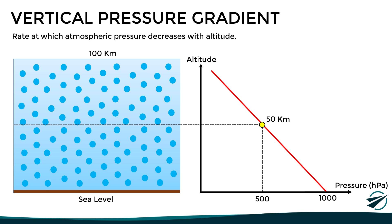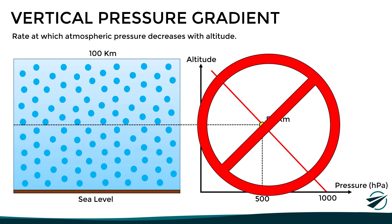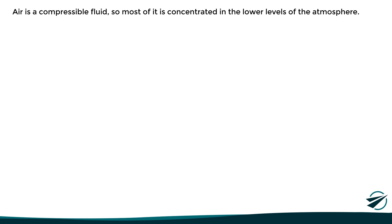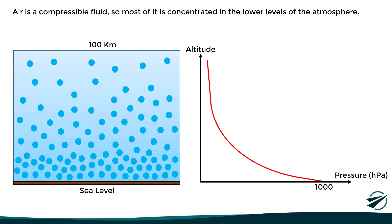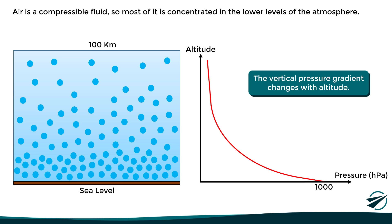This sounds logical since at that point we would only be supporting half the weight of the atmosphere. But this is just not true. Air is a compressible fluid, which means that most of it is concentrated in the lower levels of the atmosphere. We would rather obtain a graph where the pressure reduces a lot faster at low altitudes than at higher levels. This means that pressure does not decrease at a constant rate, and therefore the vertical pressure gradient changes with altitude.